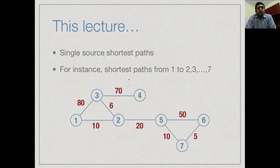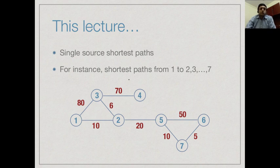We begin by looking at the single-source shortest path problem. We designate a start vertex — by convention, vertex 1. We have a graph with 7 vertices, edge weights written in red beside the edges, and we want to start at vertex 1 and find the shortest possible cost to reach every other vertex in a systematic way.